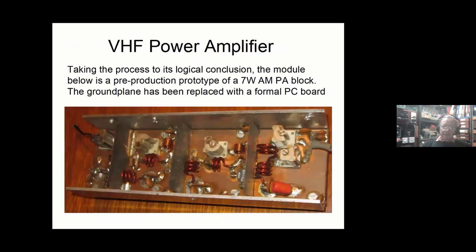This takes the process to its logical conclusion — a pre-production 7-watt amplifier block for 150 to 170 MHz. Dead bug technology has been applied on a slightly more formal printed circuit board. We made quite a lot of these; the overall structure was improved because the U-shaped heatsink wasn't particularly effective, so we ended up turning the structure sideways and mounting everything on an aluminium block about half an inch thick and one and a half inches wide, bolted onto the back panel of the mobile radio with a proper thin heatsink. The technique proved perfectly reliable in production, working fine in a car or lorry with no components falling off.